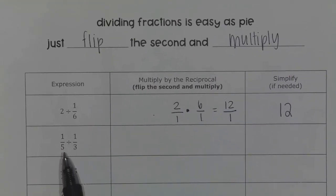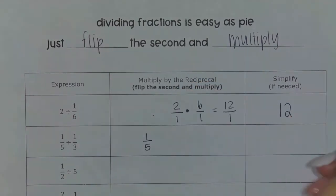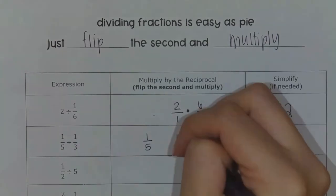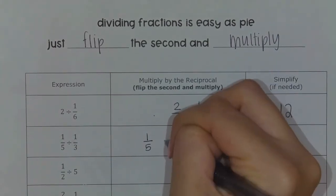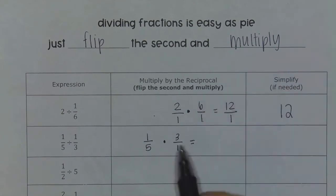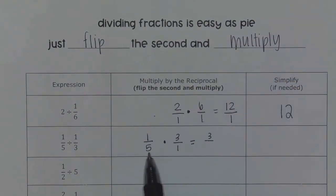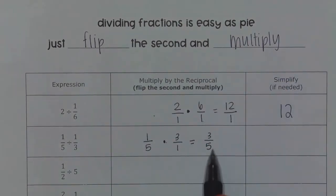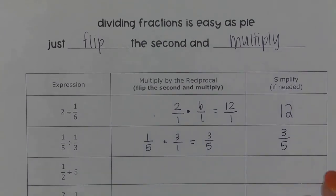The next problem says one-fifth divided by one-third. I'm going to leave the first fraction alone and flip the second fraction — so instead of one-third, it becomes three over one — and then multiply. The top times the top gives me three, and the bottom times the bottom gives me five. I can't simplify three-fifths, so it's a final answer of three-fifths.